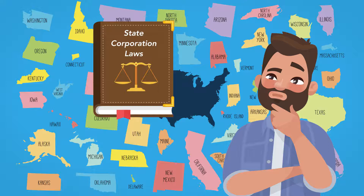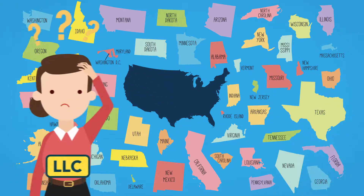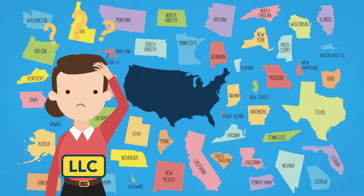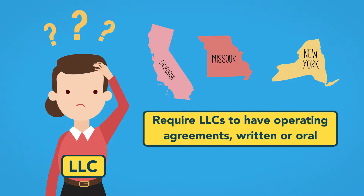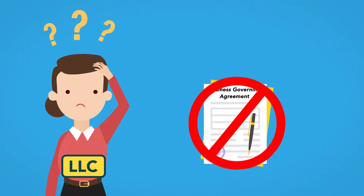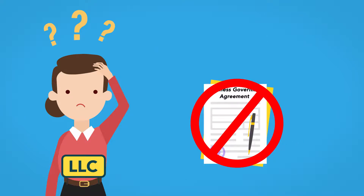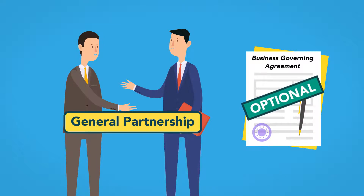In the case of an LLC, less uniformity exists. Some states, like California, Missouri, and New York, require LLCs to have operating agreements, either written or oral. Others do not require operating agreements but mandate that they must be in writing if they exist, while still others have no operating agreement requirements. In the case of general partnerships, having a partnership agreement is always optional.